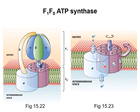As time passes, the C subunits will rotate completely around, as shown. When the protons get to the second half channel, they are released from C and can diffuse into the matrix. The net effect of this process is to move protons from the intermembrane space into the matrix down the electrochemical gradient, using the energy from the spontaneous process to drive rotation of the ring of C subunits.